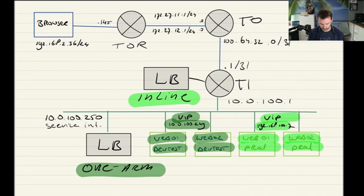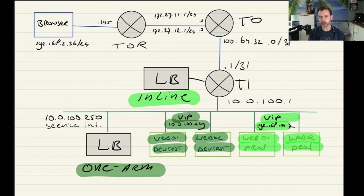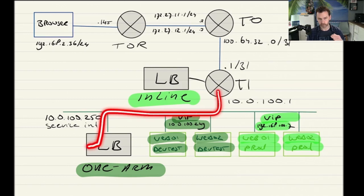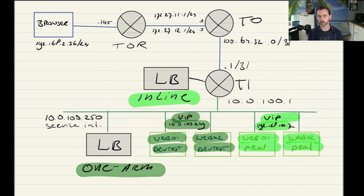The second load balancer I created is a separate T1 — a T1 created purposely just to do load balancing. It's not connected to the T0 router. It's only connected with a service interface to the web segment. This is how we do load balancing using one arm: it's a single interface, so traffic hits the load balancer going in over that interface and going out over the same interface — hence one-arm load balancer.